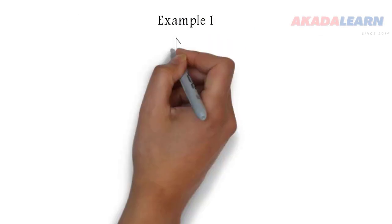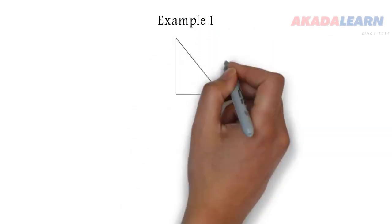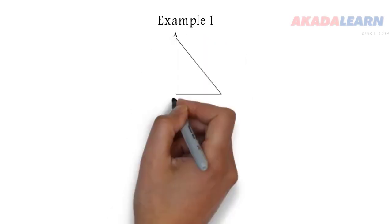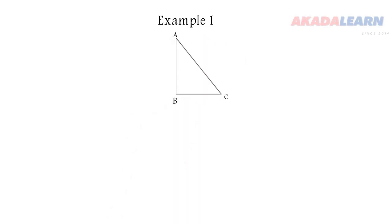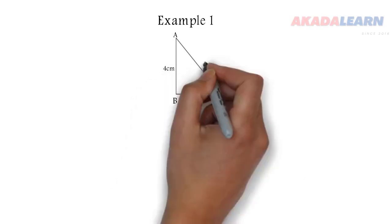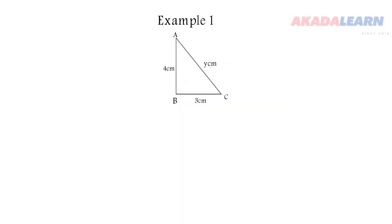We have a right-angled triangle here. Let's label the sides: A, B, and C. Side BC is 3, side AB is 4 centimeters. We are looking for side AC, which is the hypotenuse.